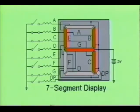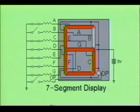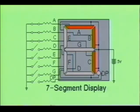To display decimal number 4, segments B, C, E, and G must be activated. Decimal number 5 is displayed when segments A, C, D, E, and G are turned on. Likewise, decimal number 6 is displayed when segments A, C, D, E, F, and G are energized. And decimal number 7 is displayed when segments A, B, and C are turned on.